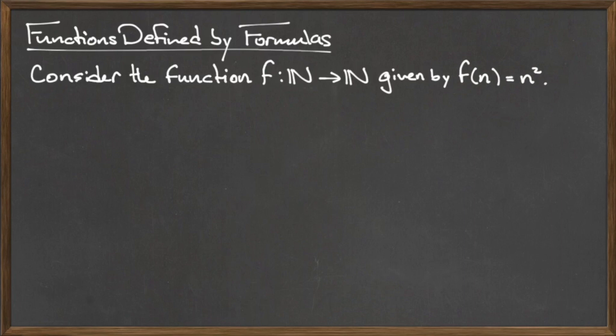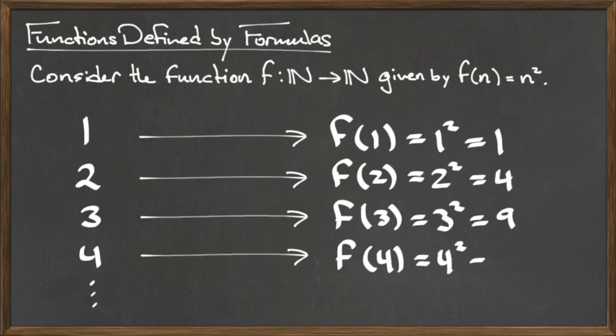For any natural number n we provide as input, we calculate its image under f by squaring the input.